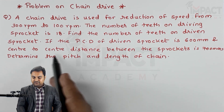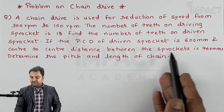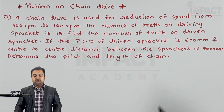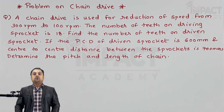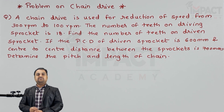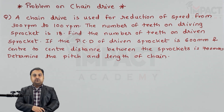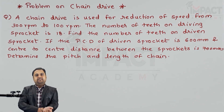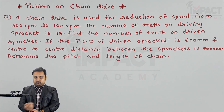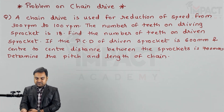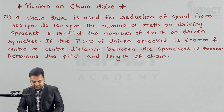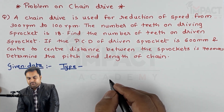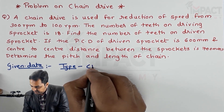If the PCD of the driven sprocket is 600 mm and the center to center distance between the sprockets is 700 mm, determine the pitch and the length of the chain. Now reading the question step by step, I'll write the data. This is a chain drive problem.